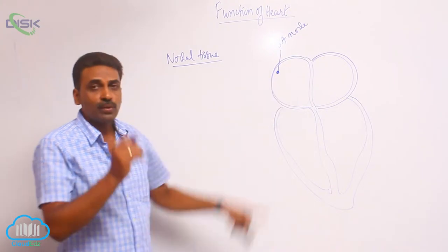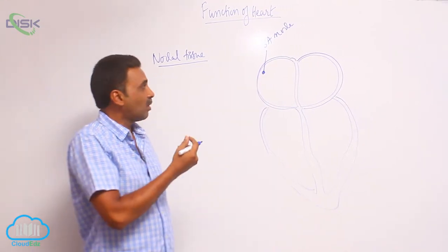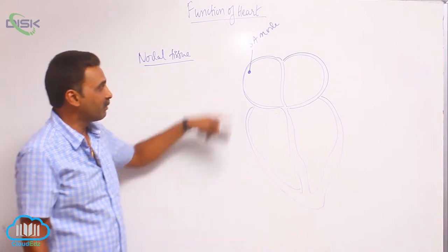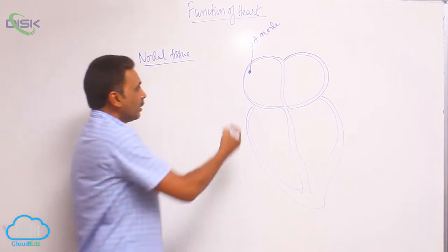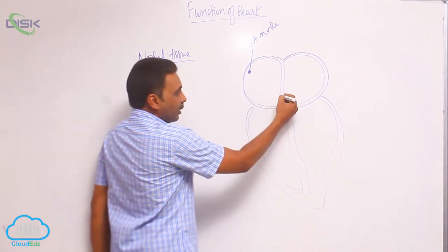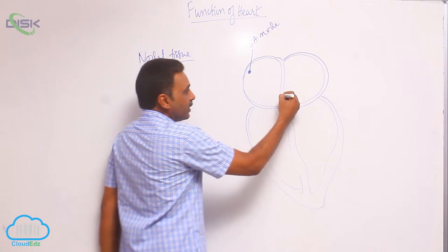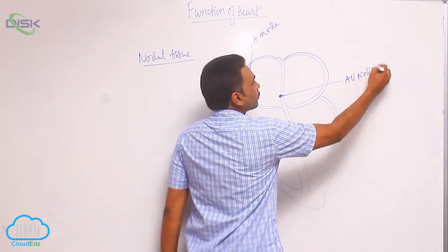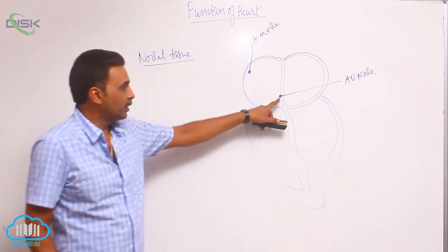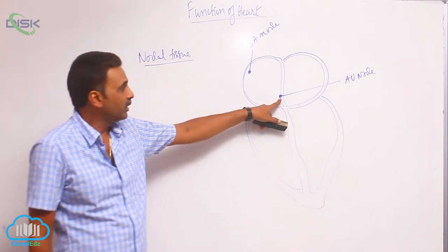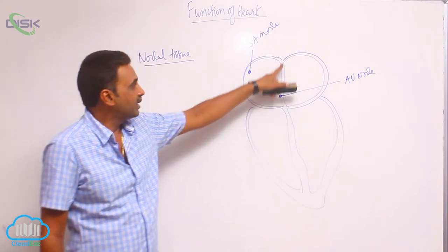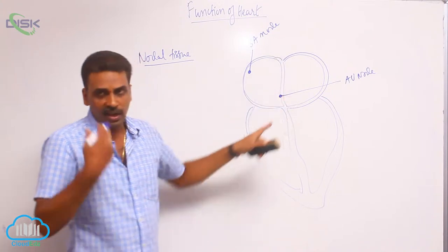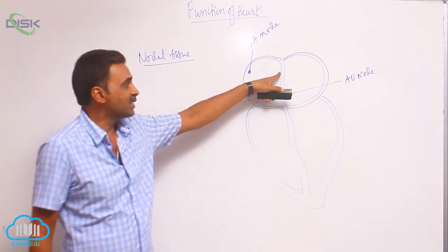The SA node is located at the base, very close to the opening of the precaval vein. There is also an AV node. The location of the AV node is at the inferior aspect of the inter-atrial septum.